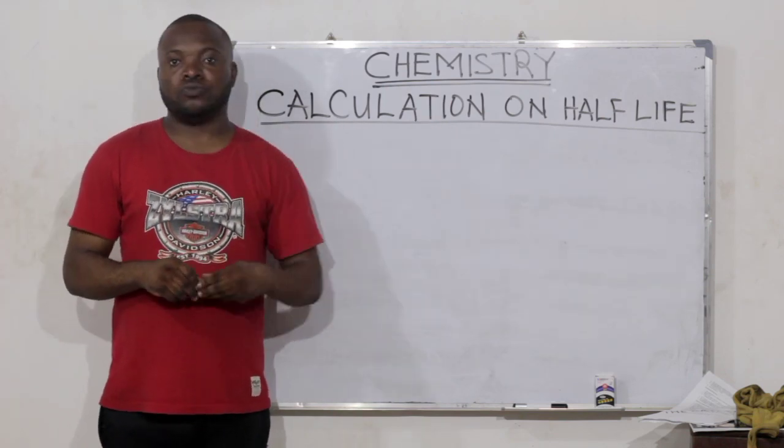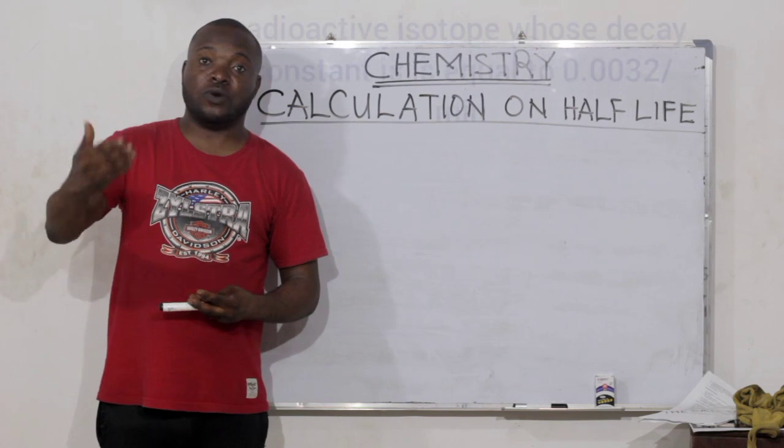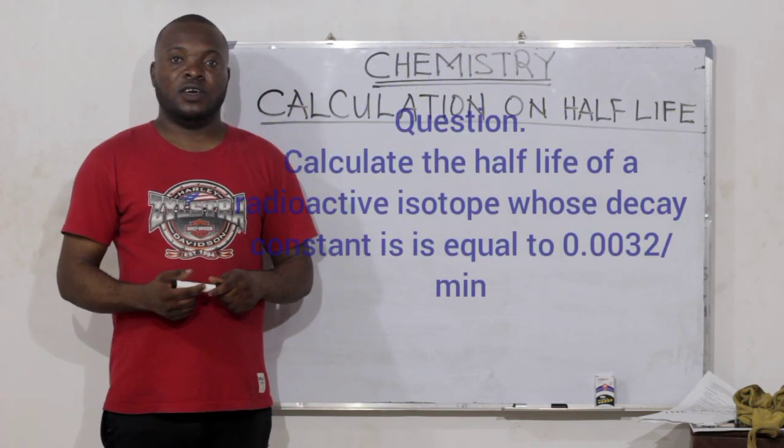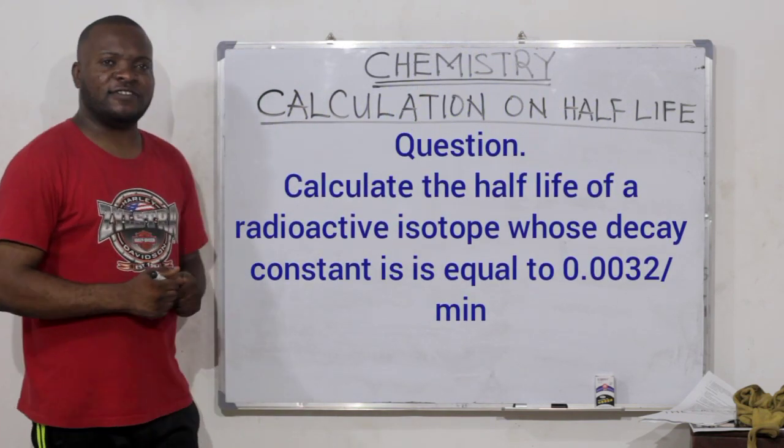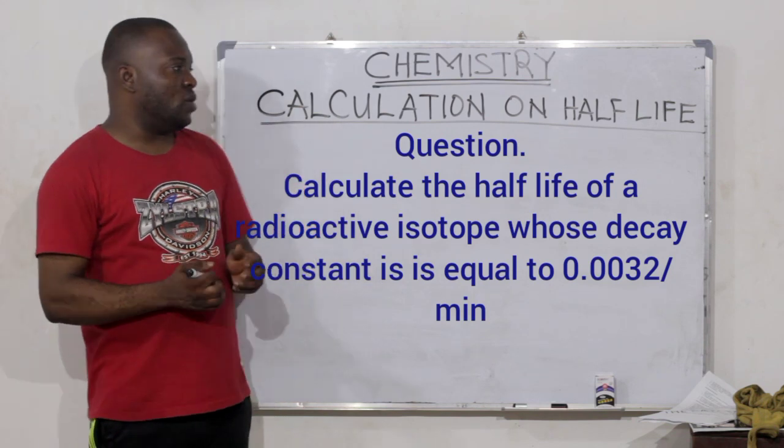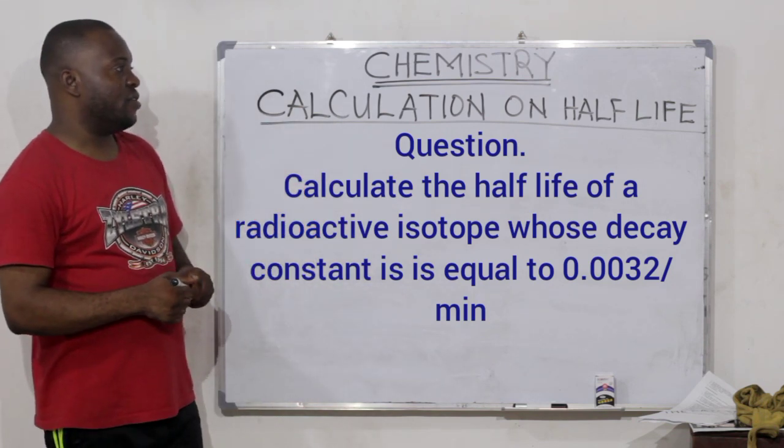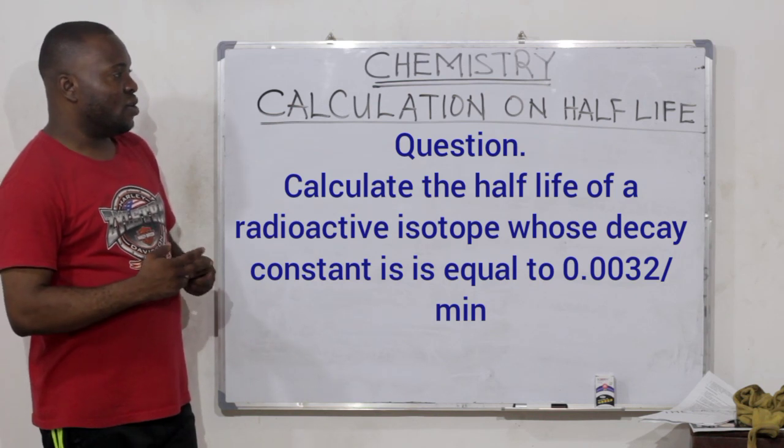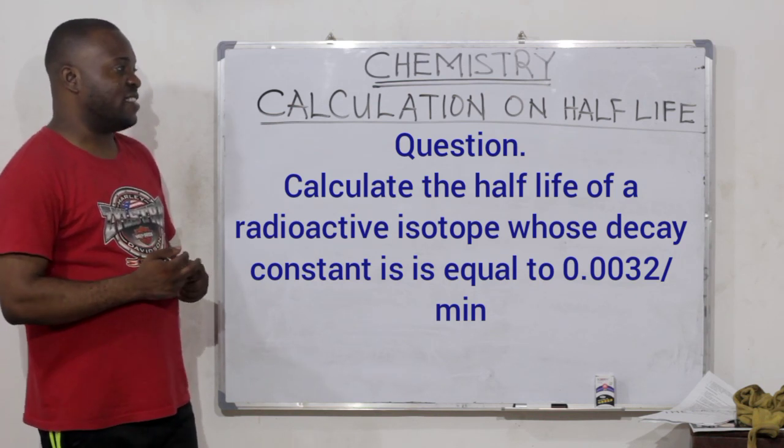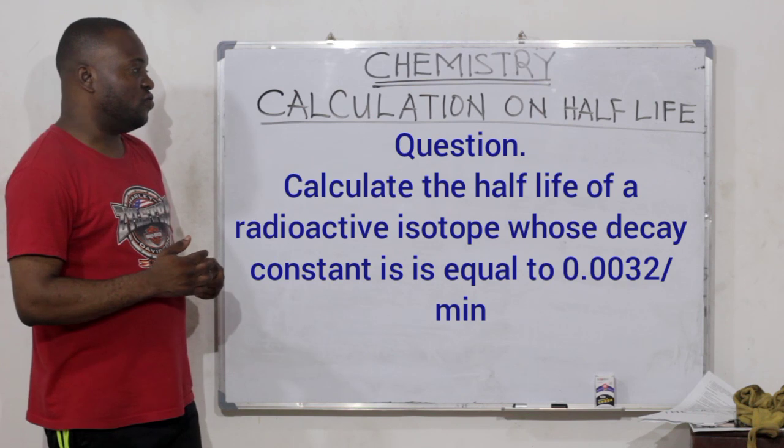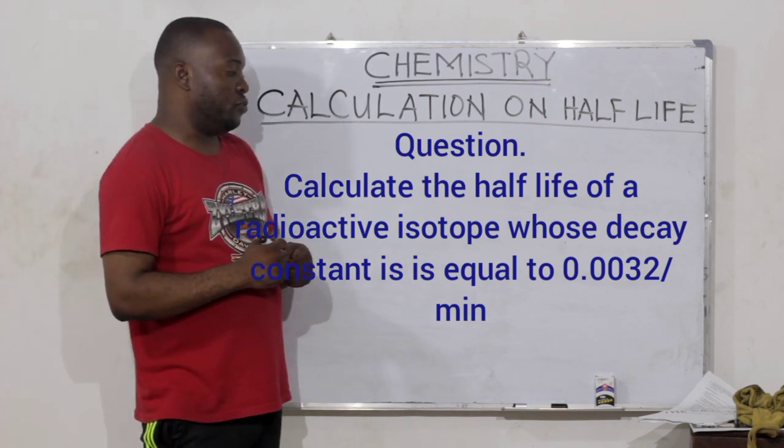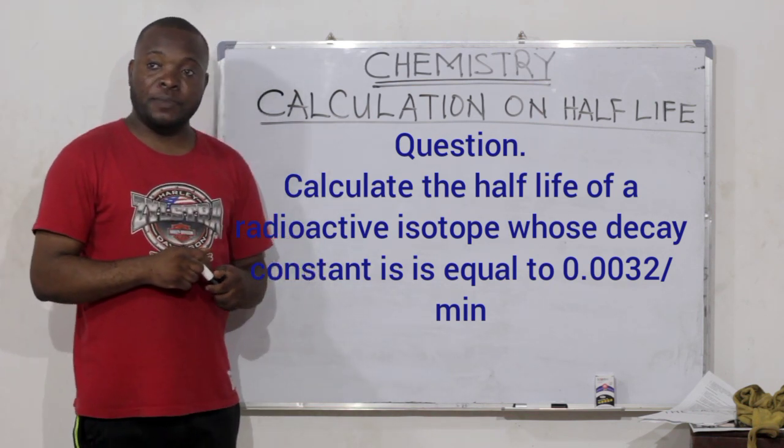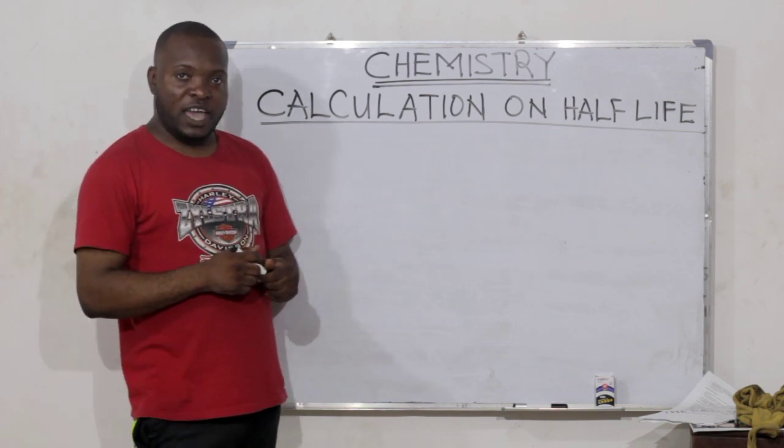In the next video, we'll look at bigger questions on half-life. Let's take a look at this question that says calculate the half-life of a radioactive isotope whose decay constant is equal to 0.0032 per minute.